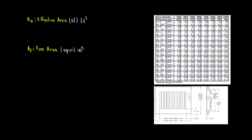The second difference is about friction. In effective area, we are including friction — it includes friction. Free area does not include friction — no friction.